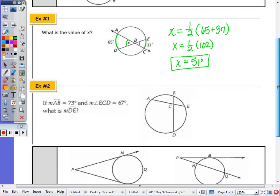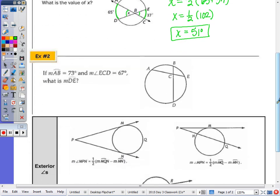Number two: the measure of arc AB is 73 degrees, and the measure of angle ECD is 67 degrees. What is the measure of DE?